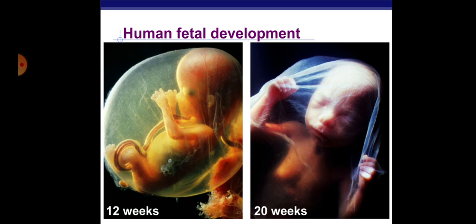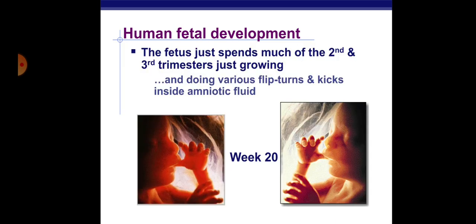In this slide you can see the fetal development at 12 weeks. The umbilical cord can be seen very clearly, and hands, fingers, prominent head, ear, and eyes can be seen. The next photograph shows the fetal development at 20 weeks.